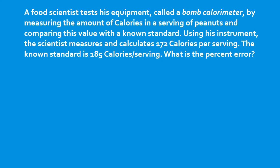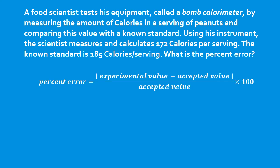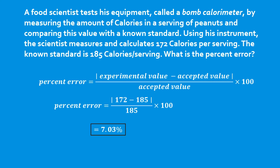A food scientist tests his equipment — a bomb calorimeter — and measures the amount of calories in a serving of peanuts, comparing this with a known standard value. Using his instrument, the scientist measures and calculates 172 calories per serving. The known standard is 185 calories per serving. What is the percent error? Our experimental value is 172 and our accepted value is 185. The absolute value of 172 minus 185, divided by 185, times 100, gives us 7.03%.